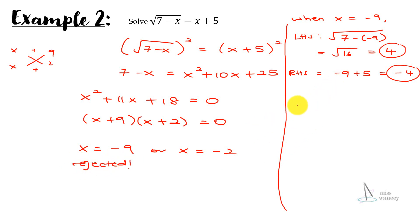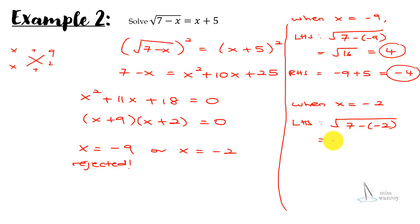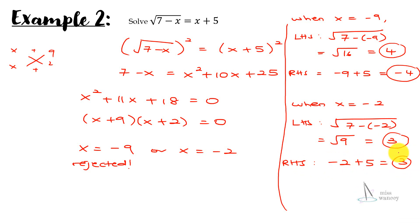When x equals negative 2: left-hand side gives square root of 7 minus (−2) = square root of 9 = 3. Right-hand side: negative 2 plus 5 = 3. So 3 equals 3, therefore x = −2 is our final answer. Always check when you end up with two answers.